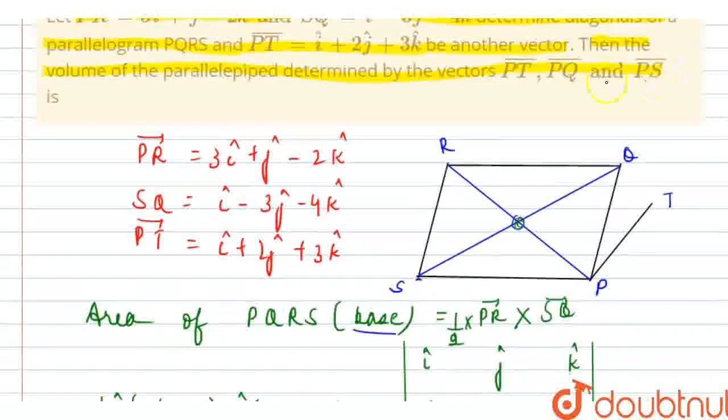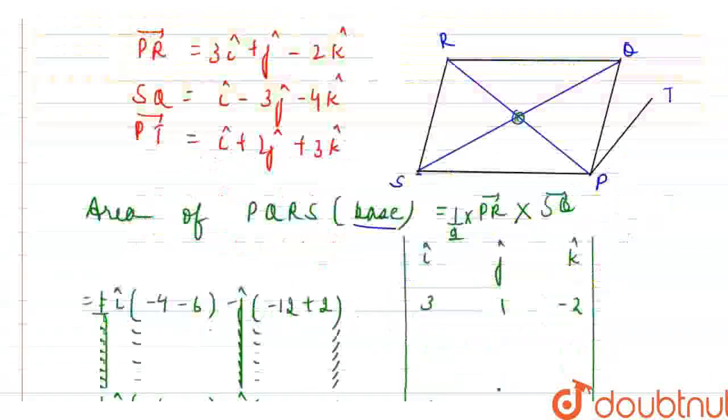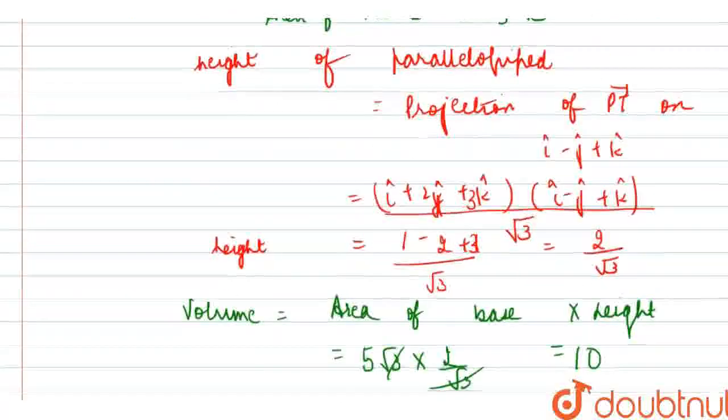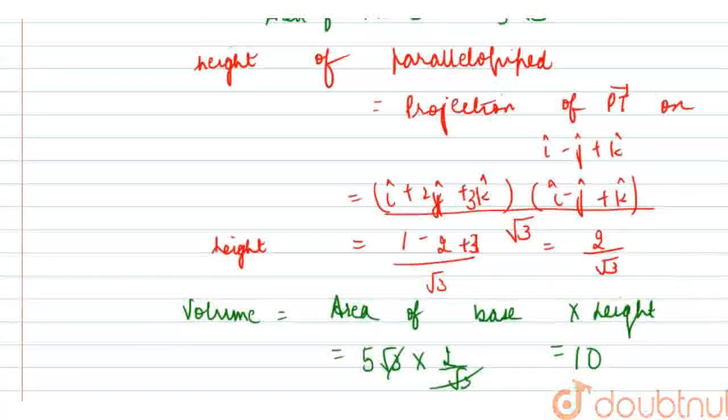We can say that the volume of the parallelepiped determined by the vectors PT, PQ and PS is 10. I hope it is clear. Thank you.